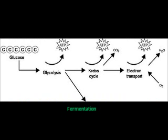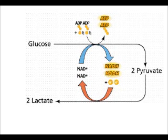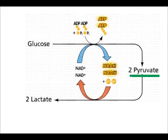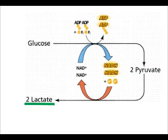In human cells, you will undergo a process called lactic acid fermentation, where glucose is broken down into 2 pyruvate molecules, which when no oxygen is present, then become 2 lactate molecules. These become lactic acid and are what make your muscles sore after an aerobic workout.